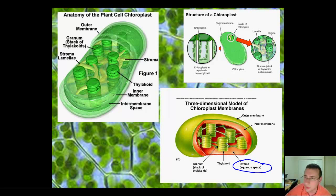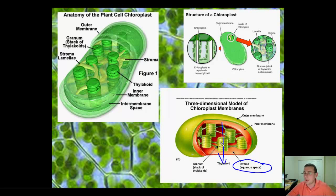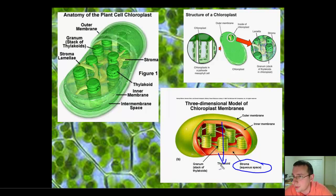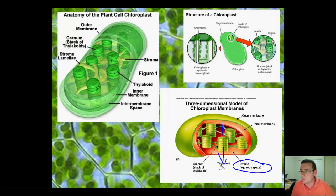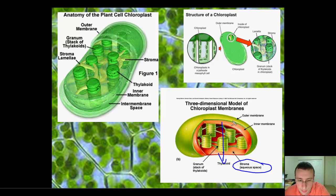More important than knowing the structure is knowing why it's like that. The reason thylakoids are stacked is because when light is going through them, if one thylakoid doesn't absorb all the light it needs to, the second one will and the third one will. By stacking hundreds of them on top of each other, you can capture as much of the light as possible. Even then, only 23% of the light is actually captured by those chloroplasts. The chloroplasts that first evolved with stacking had an advantage, and that's why more and more stacking evolved - more energy captured means more efficiency.